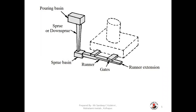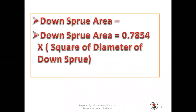In this picture you can see the downspout, pouring basin, spout basin, runner bar area or runner bar, ingates, ingate extension, etc., for your ready reference.